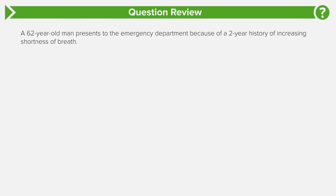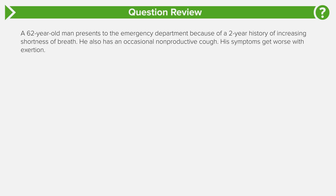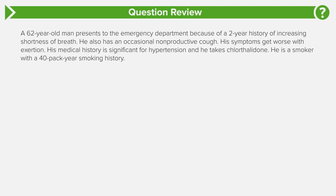A 62-year-old man presents to the emergency department because of a two-year history of increasing shortness of breath. He also has had occasional non-productive cough. His symptoms get worse with exertion. His medical history is significant for hypertension, for which he takes chlorthalidone. Of note, he is a smoker with a 40-pack-year smoking history.